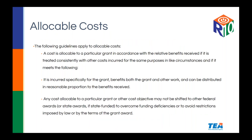Allocable is slightly different. A cost is allocable to a particular grant in accordance with relative benefits — it is incurred specifically for the grant and the benefits can be distributed. Any cost allocable to a particular grant may not be shifted to other federal awards to overcome funding deficiencies. Make sure funding stays where it is supposed to be and is meeting the needs of the program it was allocated for. That is a very fast definition of the RNAA. If you have additional questions, please reach out.